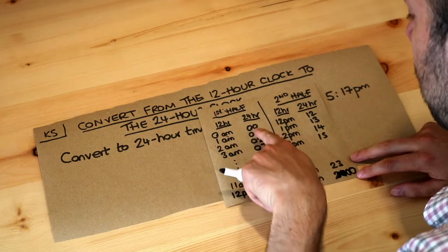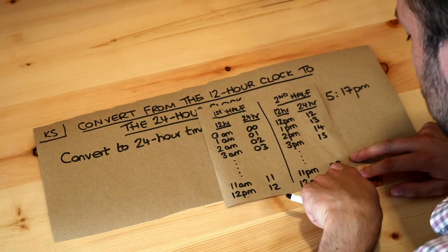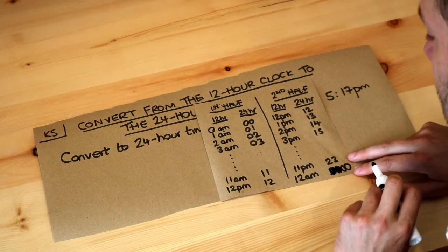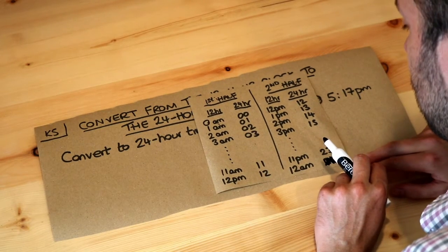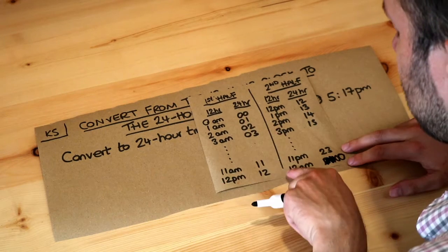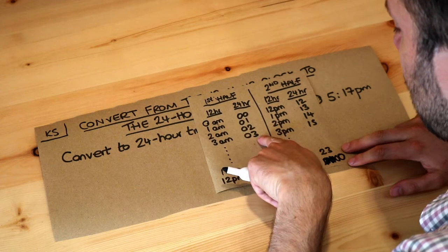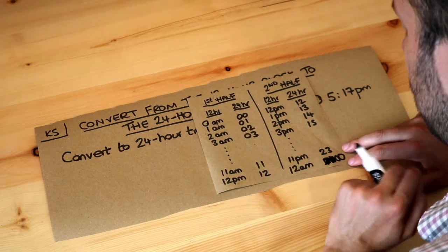On a 24-hour clock, the numbers go from 00 all the way up to 23 and then reset back to 00. Notice we always have two digits, so if the number of hours on the 24-hour clock was less than nine, then we need to put a zero on the front.